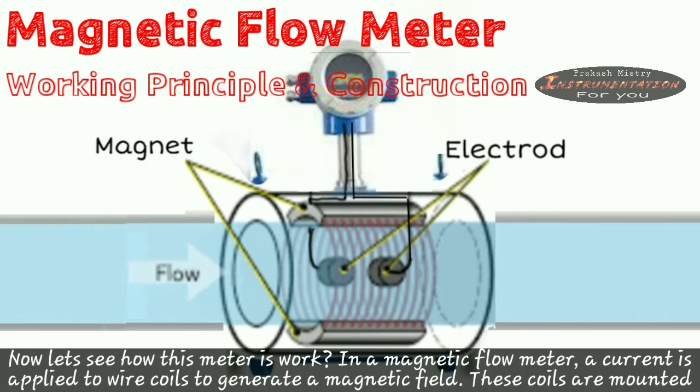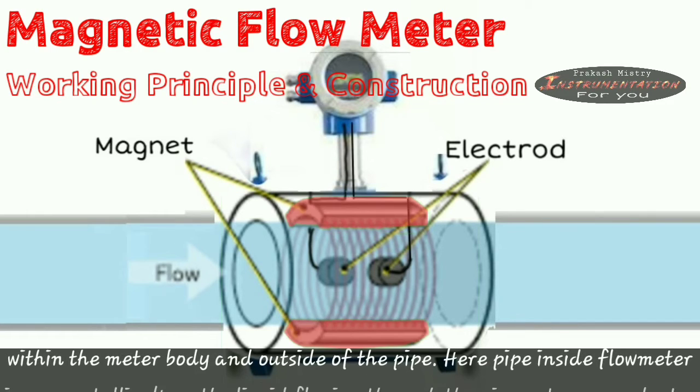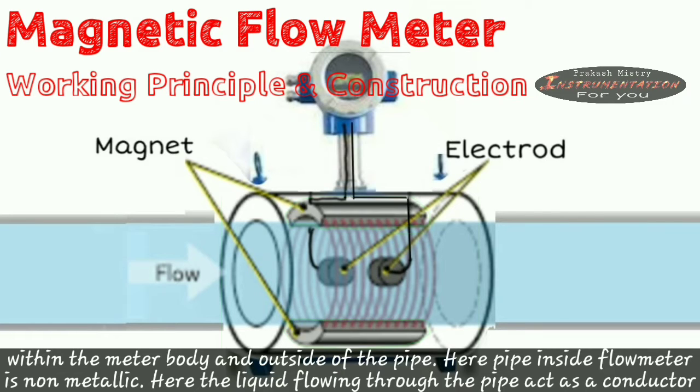Now let's see how this meter works. In a magnetic flow meter, current is applied to wire coils to generate a magnetic field. These coils are mounted within the meter body and outside of the pipe. Here pipe inside the flow meter is non-metallic.